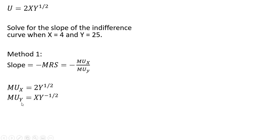Next we get the marginal utility of good y, which is the partial derivative of the utility function with respect to good y. We bring the one-half down in front — one-half times 2 is why the 2 is now missing — and then we subtract one from the exponent on the y term, leaving us with x times y raised to the minus one-half power.